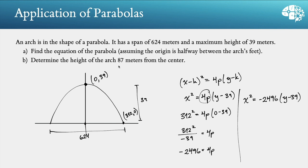For part B, we want to determine the height of the arch 87 meters from the center. So from the center, if we move 87 meters, how high is the arch at that point? So we're looking for this height here. In other words, this point right here, the x-coordinate is the 87, and the y-coordinate, that's what we don't know. We're looking for that y-value. And so we can just take this equation now and plug in that x-value that we know and solve for y.